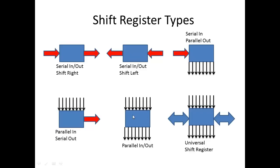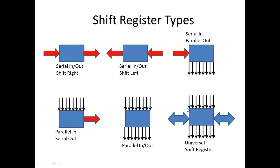The parallel in, parallel out type is mostly used for storage of data — you can picture this as memory banks inside your computer. You send eight bits of data into it and it stores it until you need it, so it's a good way to buffer information between input and output. And there's also what's called a universal shift register where you can shift in and out right or left, and do parallel in serial out, serial in parallel out, or whatever way you want.